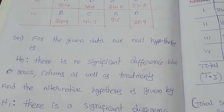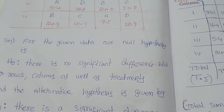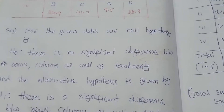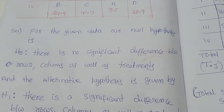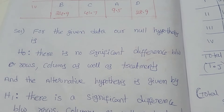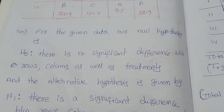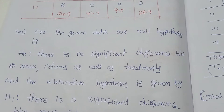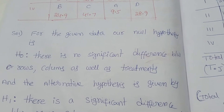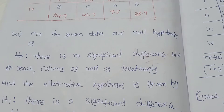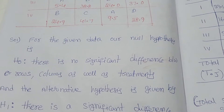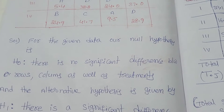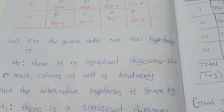Coming to the solution: for the given data, our null hypothesis H₀ is that there is no significant difference between rows, columns, as well as treatments. This is a three-way classification. In CRD we take one-way classification; in RBD we take row-wise and column-wise, that is two-way classification; here in Latin Square Design we take three-way classification — rows, columns, as well as treatments.